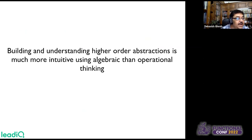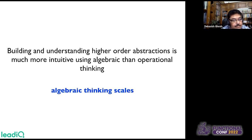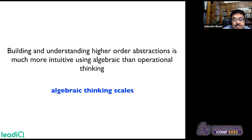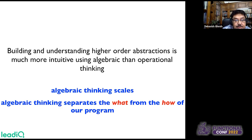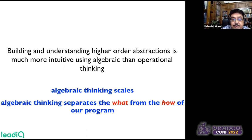Building and understanding higher-order abstractions is much more intuitive using algebraic than operational thinking. Algebraic thinking scales — we started with algebra for a type and can scale to the algebra for a module, and ultimately to the algebra of a complete domain model. One important point: algebraic thinking separates the what from the how of our program. When looking at the algebra, we are not concerned about implementation — this is programming to the interfaces, not to the implementation.